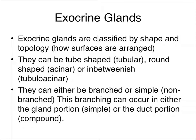Exocrine glands are labeled and defined by their shape and their topology — how their surfaces are arranged together — and also classified by their function. In terms of shape, they can be either tube-shaped, which is called tubular, or round-shaped, which is called acinar. They can also be a spectrum of in-between shapes, like kind of round tubes or oblong round areas, and that in-between shape is called tubuloacinar.